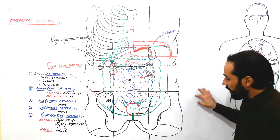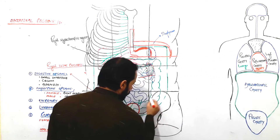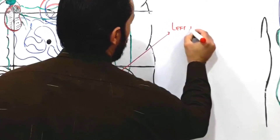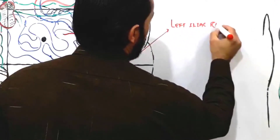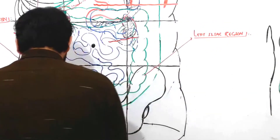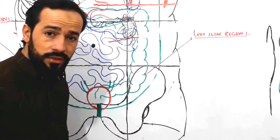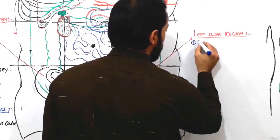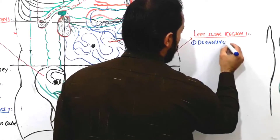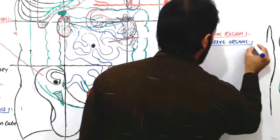Let's move forward towards your left iliac region and see what structures are found here. This part is your left iliac region. I have divided all the organs present in the different abdominal regions into groups. The first group of organs found in the left iliac region will be your digestive organs.